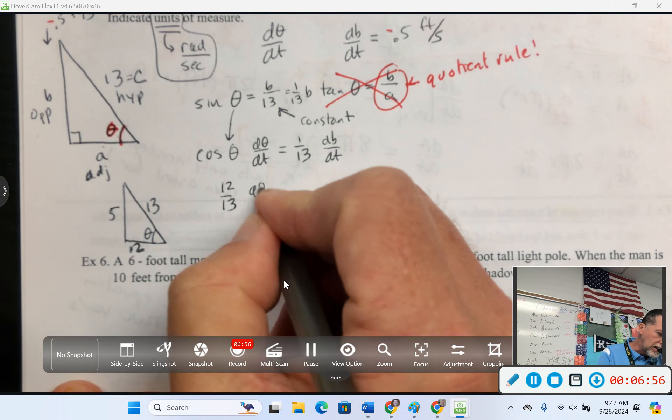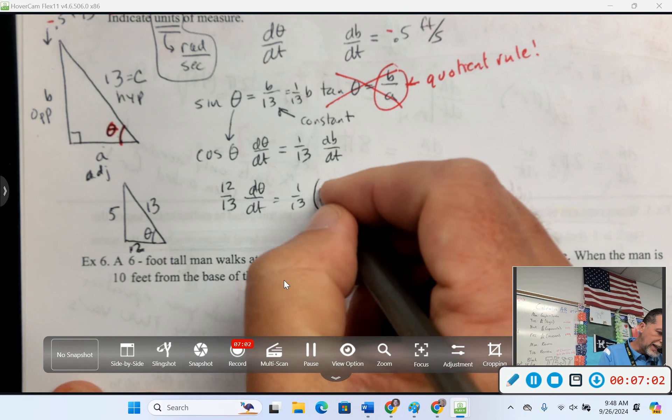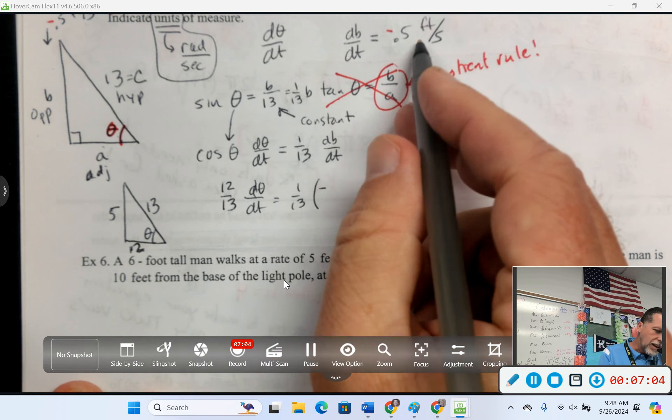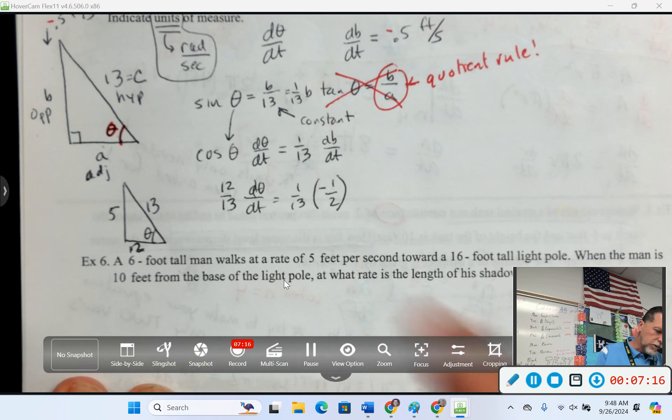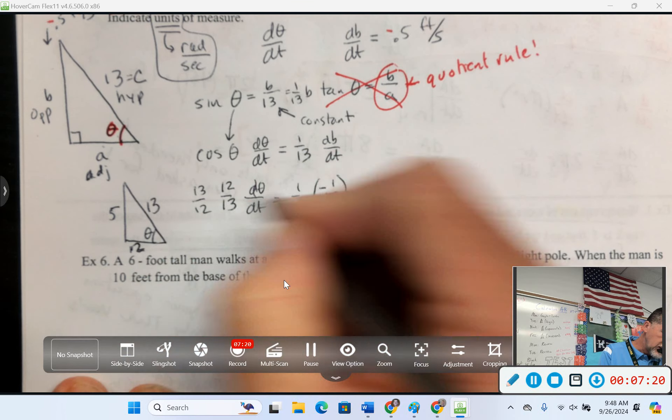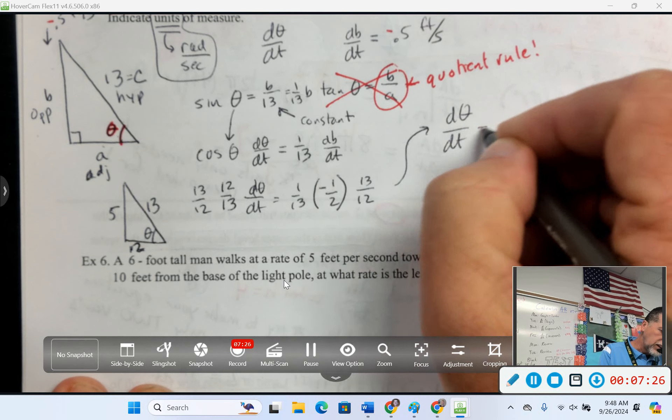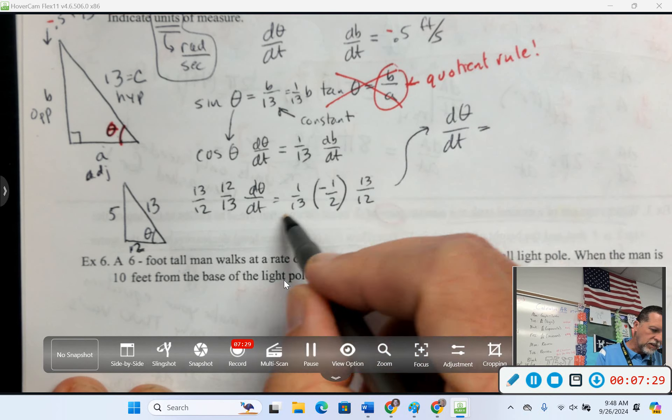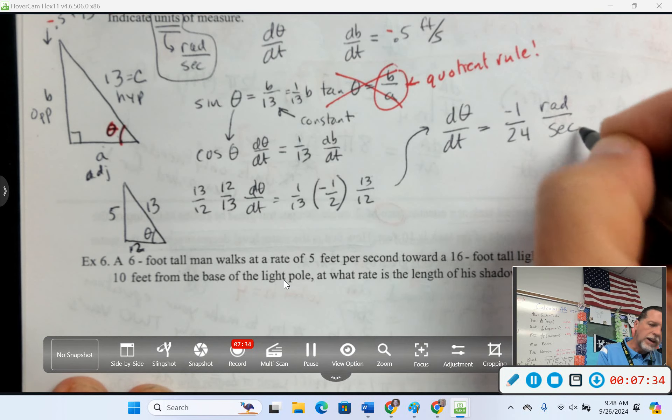So, dθ/dt is what we're looking for. 1/13, dB/dt is negative. I'm going to switch it to 1/2 just because everything else is in fractions. But negative 0.5 is fine. So, let's multiply both sides by 13 over 12. So, dθ/dt, then, is 13s cancel. Negative 1 over 24. And we already said radians per second.